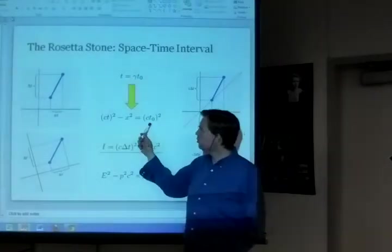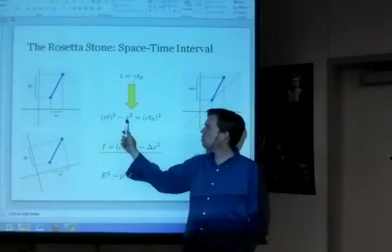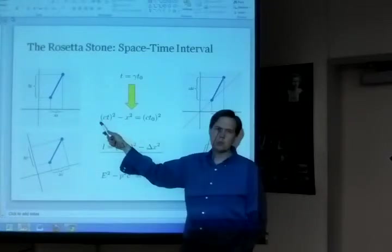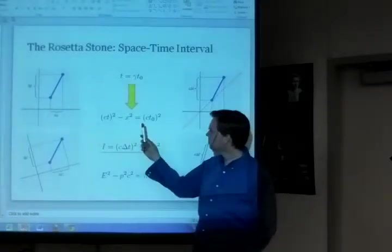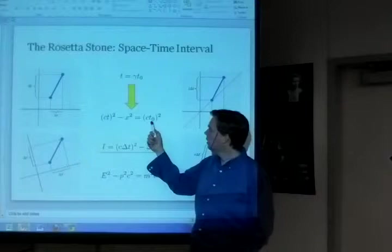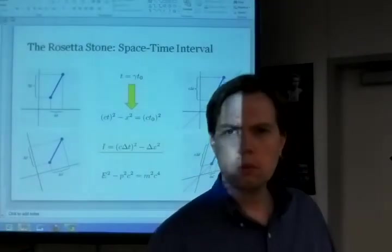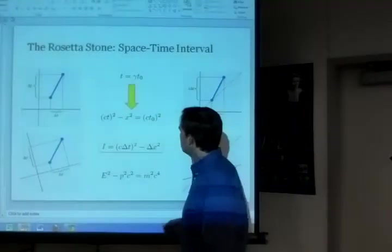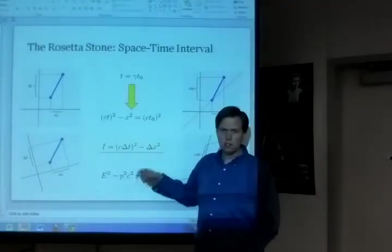The interesting thing about this formula is that on the left-hand side, we have our space and time measurements, or our perception of the space and time measurements that occur in the moving system. On the right-hand side, we have the time interval that happens between two particular events in space-time. The thing about the right-hand side is that it's constant. It doesn't change.